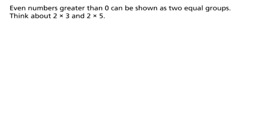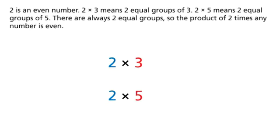Even numbers greater than 0 can be shown as two equal groups. Think about 2 times 3 and 2 times 5. 2 is an even number. 2 times 3 means two equal groups of 3. 2 times 5 means two equal groups of 5. There are always two equal groups, so the product of 2 times any number is even.